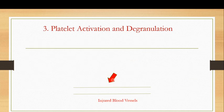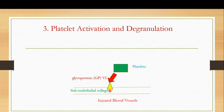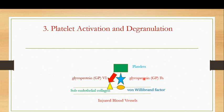In this video I want to focus on platelet activation and degranulation, which is the third step in primary hemostasis. When there is an injury to the blood vessel, the subendothelial collagen gets exposed. The platelets utilize their glycoprotein 6 to bind to the exposed subendothelial collagen, and at the same time they have the GP1b receptor, which binds to the von Willebrand factor.